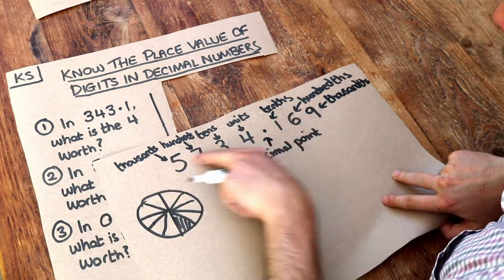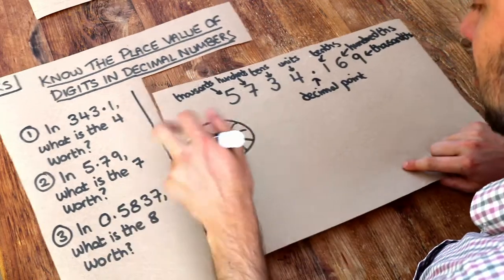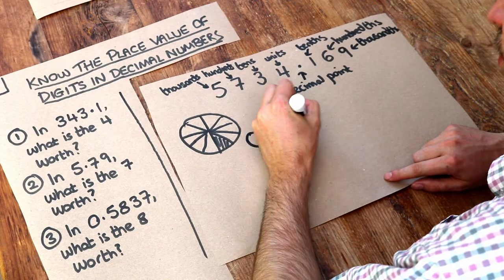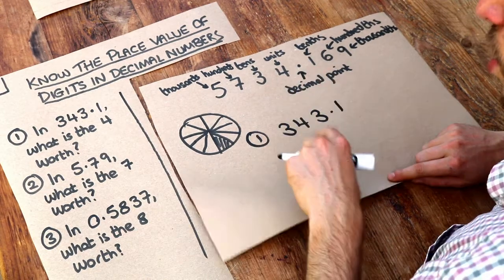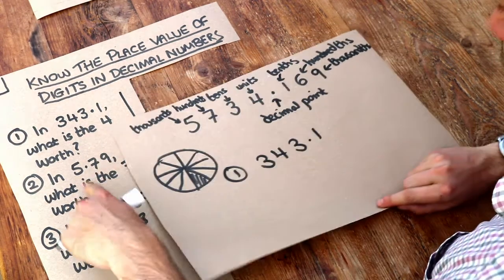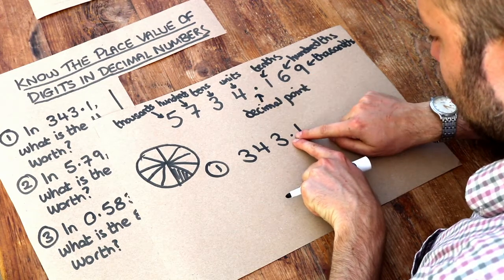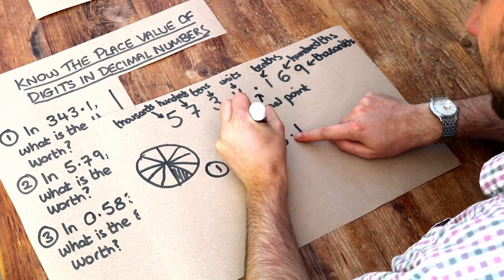Let's use our knowledge of place value to answer these questions. The first question: In 343.1, what is the four worth? This is the decimal point here. The digit just to the left of the decimal point is the units digit.